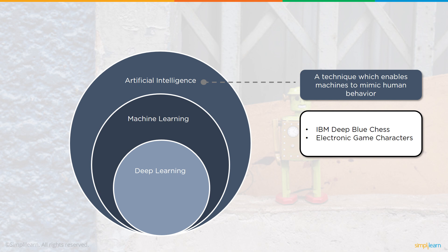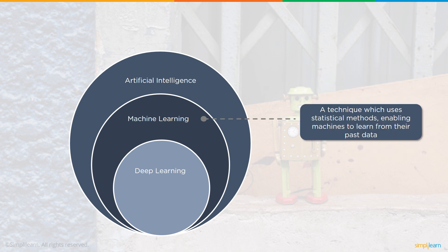Machine learning is a technique which uses statistical methods enabling machines to learn from their past data. If you have your input from last time and your answer, you use that to help predict the next answer. IBM Watson, Google search algorithm, and email spam filters are all part of machine learning.